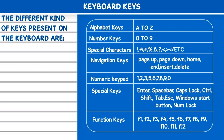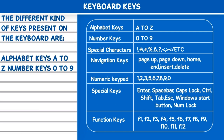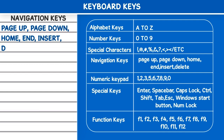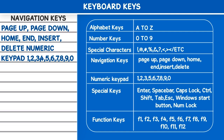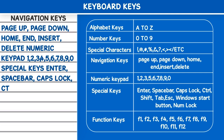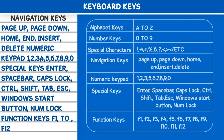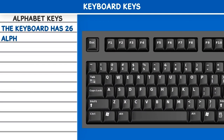Keyboard Keys. The different kinds of keys present on the keyboard are: Alphabet Keys (A to Z), Number Keys (0 to 9), Special Characters such as Exclamation Mark, At Sign, Hashtag, Percentage Sign, Ampersand, Question Mark, Comma, Slash, etc. Navigation Keys: Page Up, Page Down, Home, End, Insert, Delete. Numeric Keypad (0–9). Special Keys: Enter, Spacebar, Caps Lock, Control, Shift, Tab, Escape, Windows Start Button, Number Lock, and Function Keys F1 to F12.